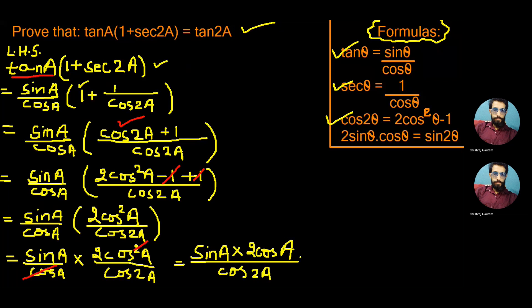Now, the numerator can be written as 2 sin A into cos A divided by cos 2A. As we know 2 sin θ into cos θ is equal to sin 2θ, so the numerator can be written as sin 2A by cos 2A.